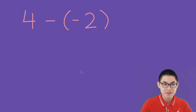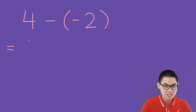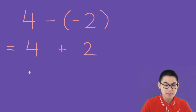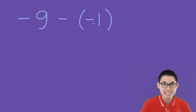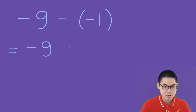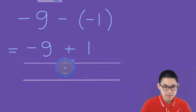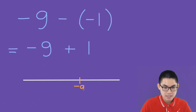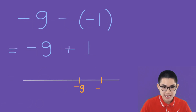What if you minus a negative number? Well, when you minus a negative number, it becomes a plus sign. So 4 minus negative 2 becomes 4 plus 2, and 4 plus 2 is 6. Negative 9 minus negative 1 is the same as negative 9 plus 1. We draw a number line starting at negative 9, and since it's a plus sign, we move to the right one time. So negative 9 becomes negative 8. The answer is negative 8.